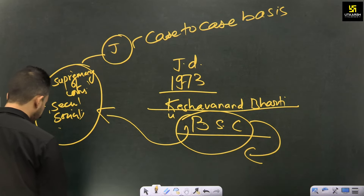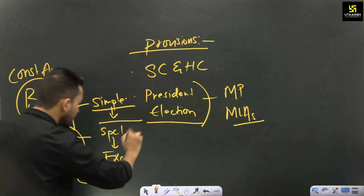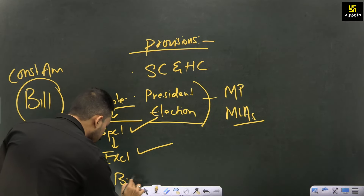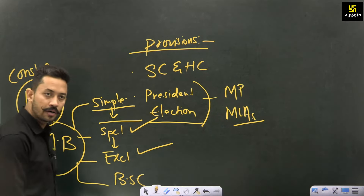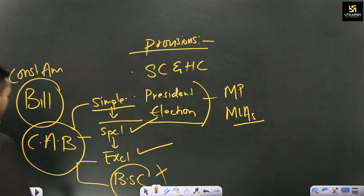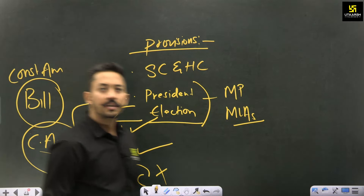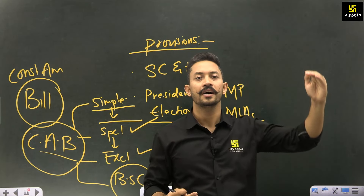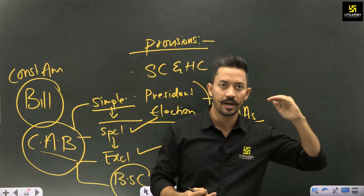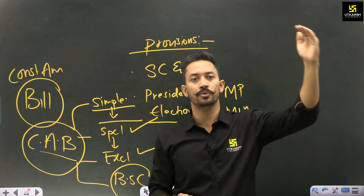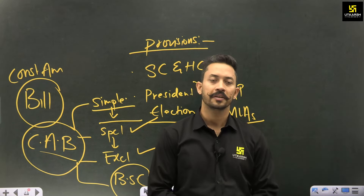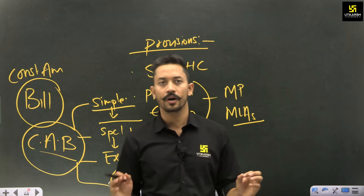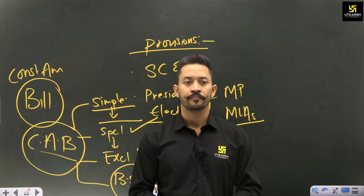Some examples of the basic structure of the constitution include supremacy of the constitution, secularism, and socialism. Parliament is empowered under Article 368 to bring amendments, but Parliament cannot alter the basic structure. So the degree of difficulty is: simple majority — easiest; special majority — harder; exclusive majority — even harder; and basic structure provisions — impossible to change.